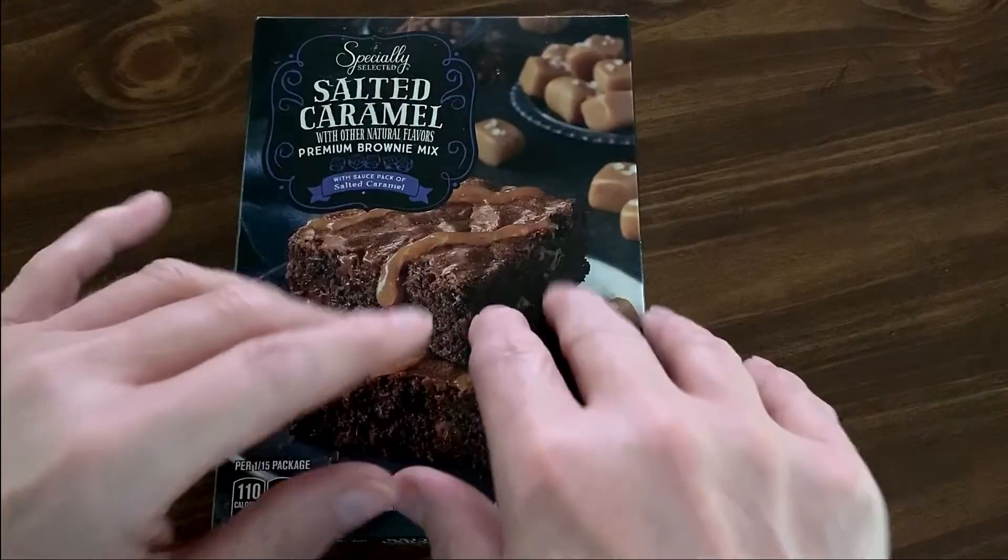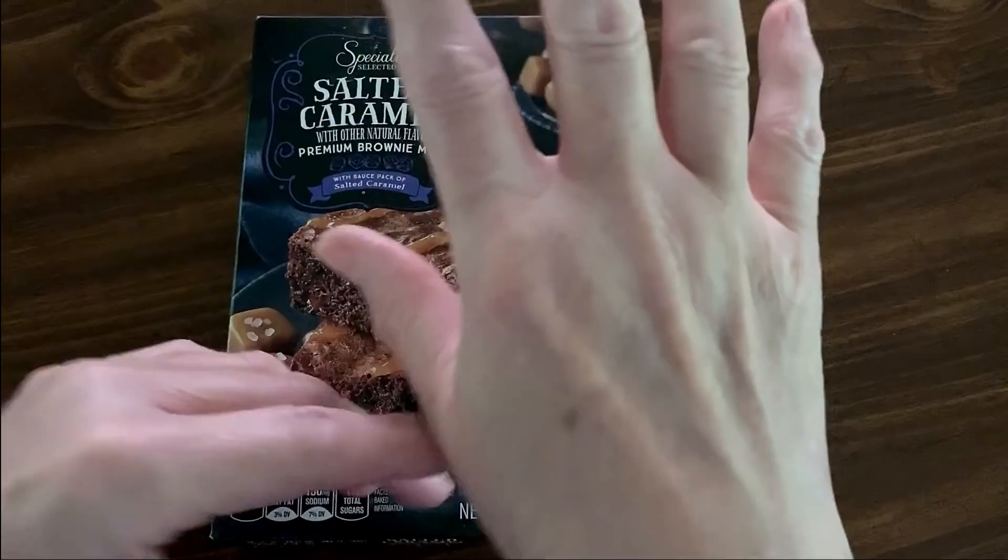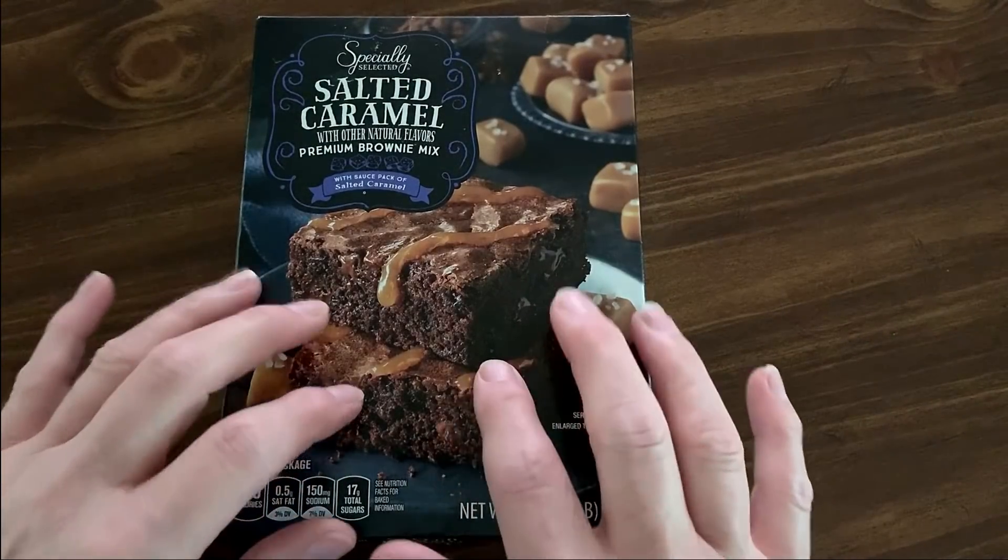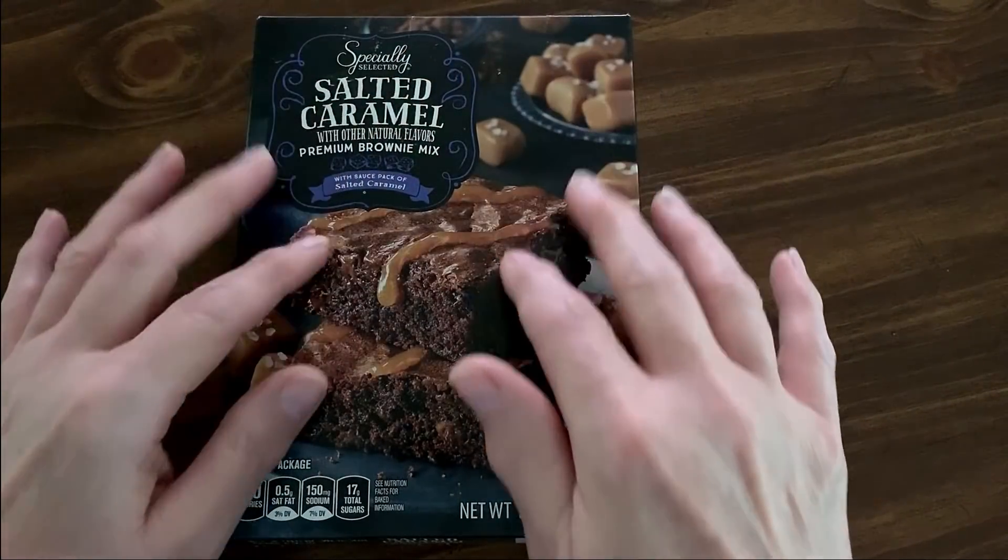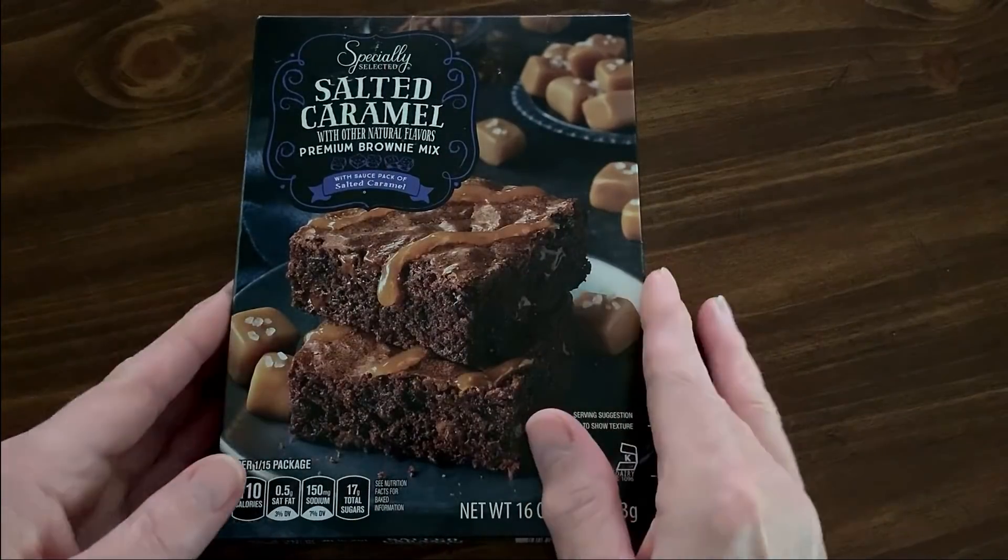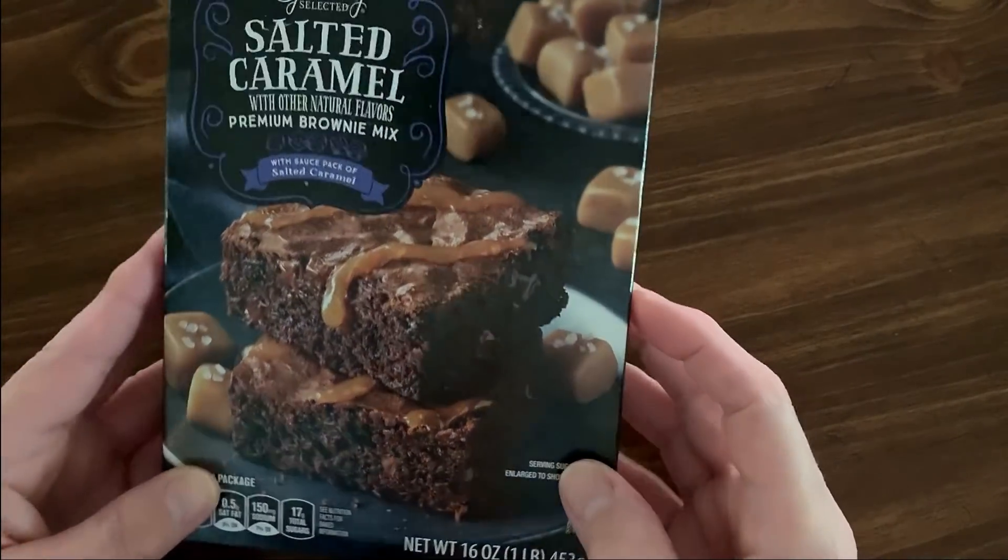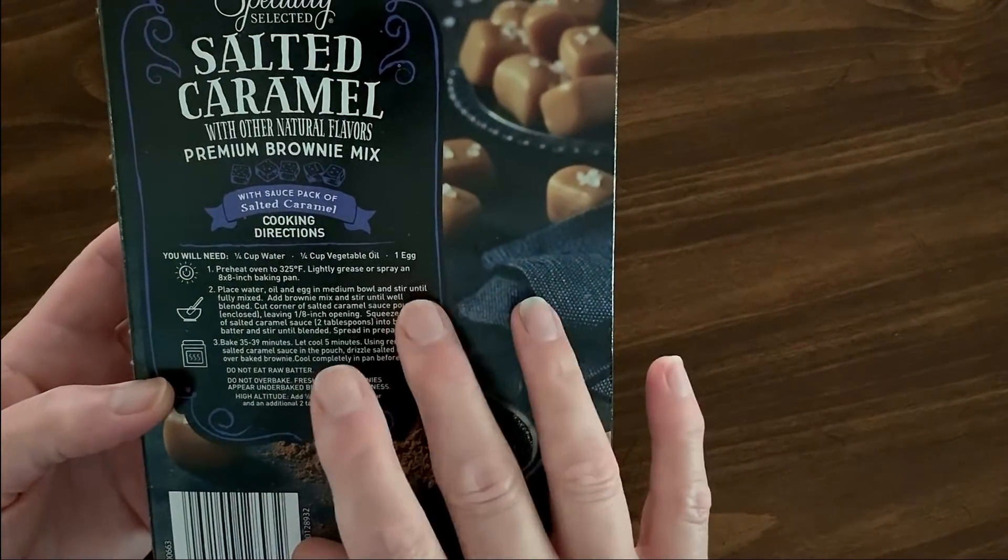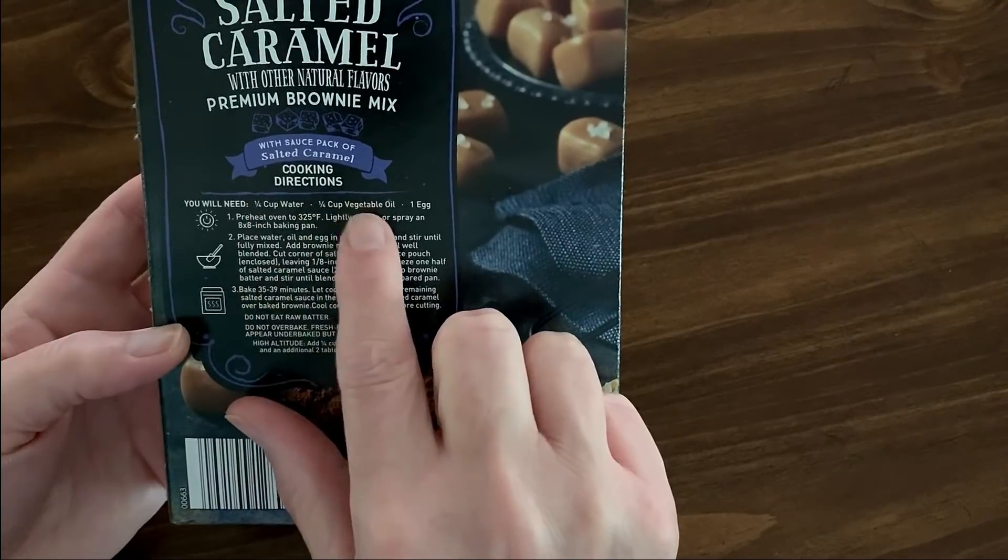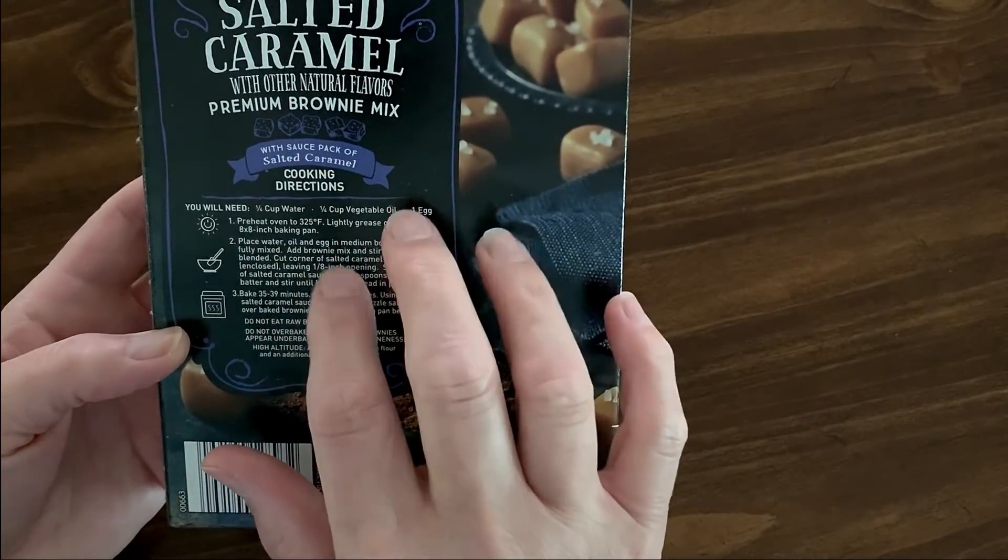I thought we'd make this together. They look so good. I'll give you a little close up here. Does that not look so delicious? Here in the back of the box, it says we will need a quarter cup water, a quarter cup vegetable oil, and one egg. And we preheat it to 325, lightly spray the pan.